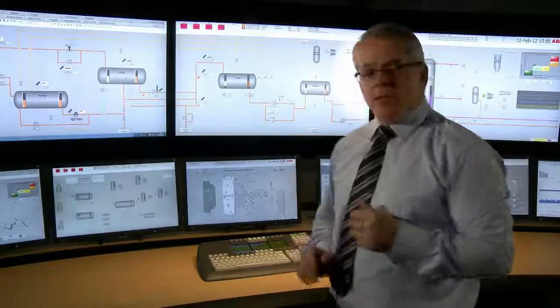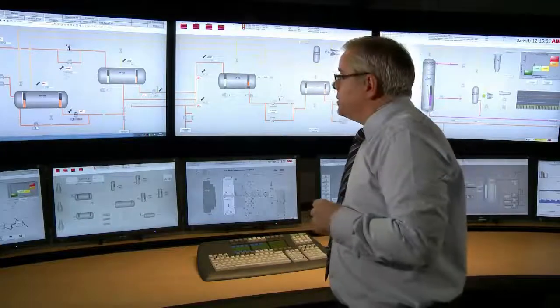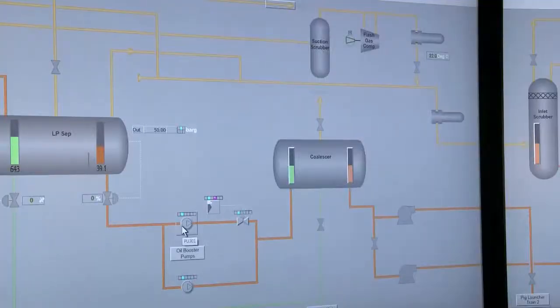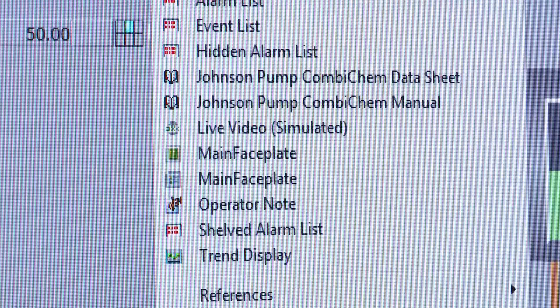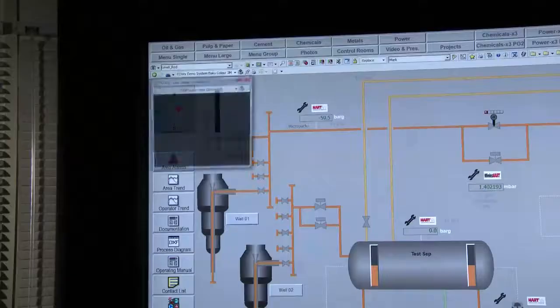That information can be video, for instance, where we can get access to video from any part of the plant. That can include pan tilt zoom information or flare cameras, which is becoming particularly popular these days.